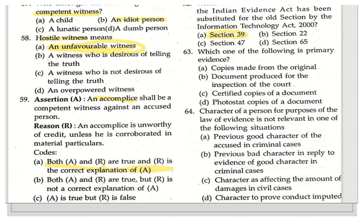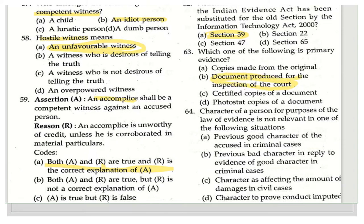The next question asks: which one of the following is a primary evidence? The options are: copies made from the original, documents produced for the inspection of the court, certified copies of a document, and photostate copies of a document. The right answer is documents produced for the inspection of the court. Section 62 talks about primary evidence.